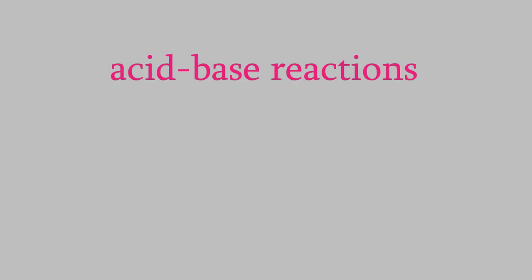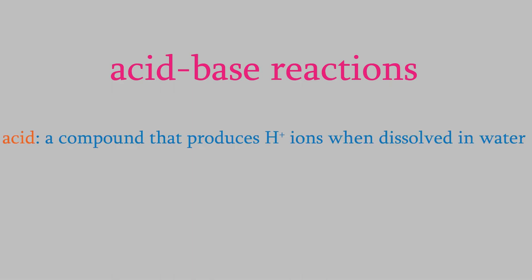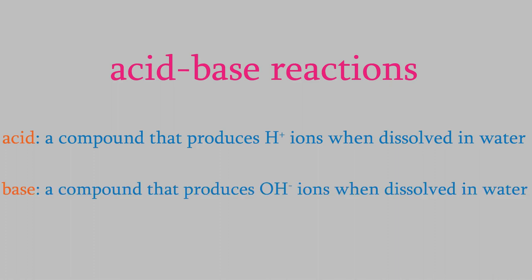So let's start by talking about acid-base reactions. In an acid-base reaction, the two reactants are an acid and a base. We should ask: what exactly is an acid or a base? For the purposes of our discussion today, we'll say that an acid is a compound that produces a hydrogen ion, H+, in water, and a base is a compound that produces a hydroxide ion, OH-, in water.